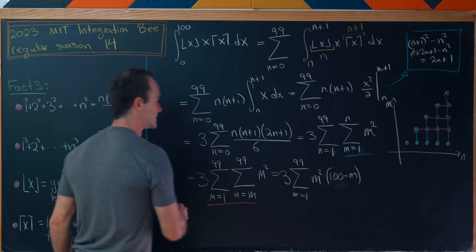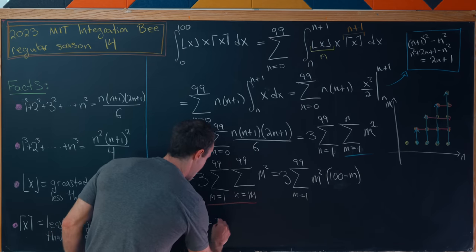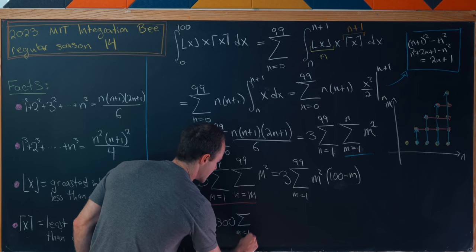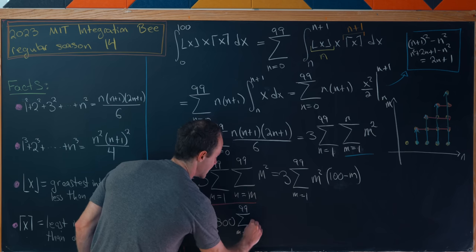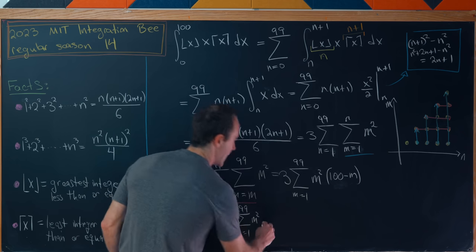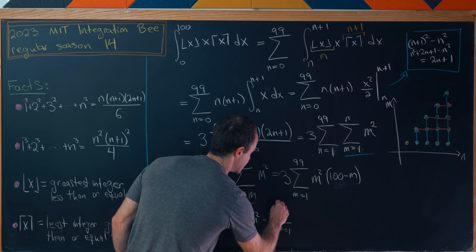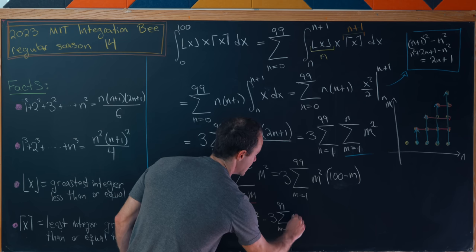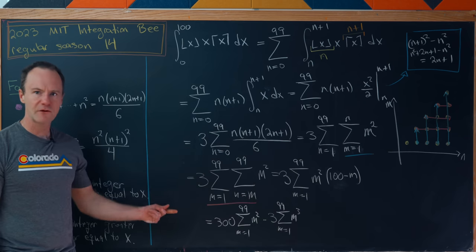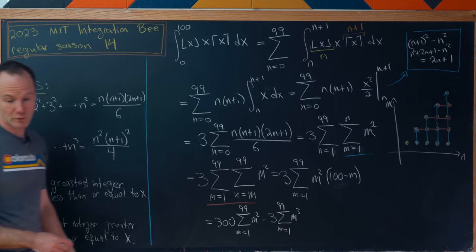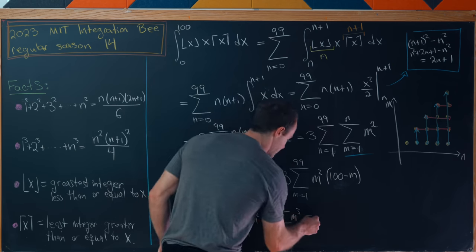And now we can smush this together a little bit. We'll have 300 times the sum as m goes from 1 to 99 of m squared, and then minus 3 times the sum as m goes from 1 to 99 of m cubed. And from there all we need to do is plug in these two formulas and we'll end up with the following number. This is just arithmetic from this point.